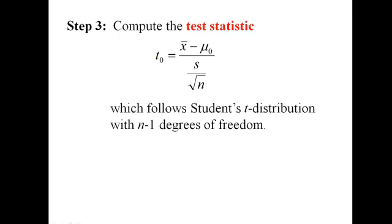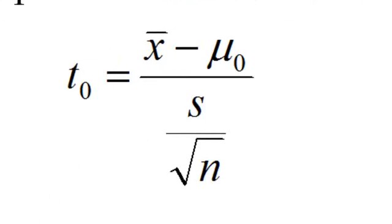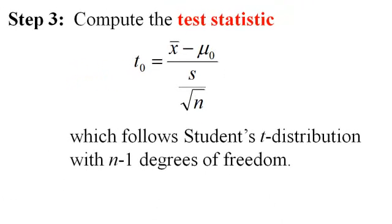In step three we compute the test statistic. So it's x̄ - μ₀ divided by s over the square root of n. It has a t distribution with n - 1 degrees of freedom, where n is the sample size.